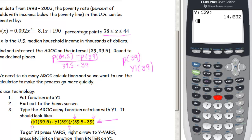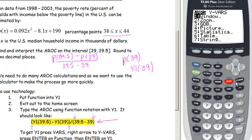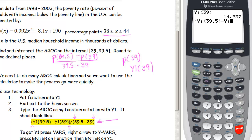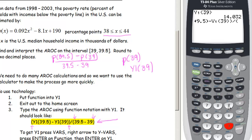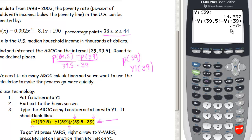Open parentheses, then press VARS, Y-VARS, function, Y1, and enter 39.5. Close the input parentheses, then minus, then Y1 with 39 inside. Close the numerator parentheses, divide by, then open parentheses around 39.5 minus 39 — which is just 0.5. Press Enter and you get the result.